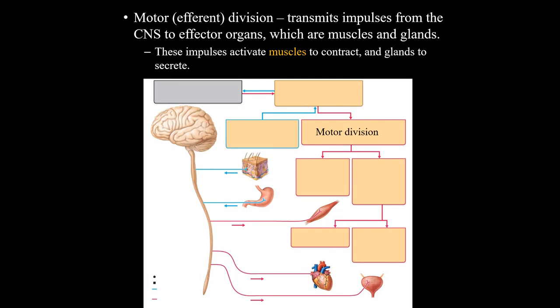After that, you have the motor or efferent division - like the southbound side of the highway. Information comes from the central nervous system out to whatever motor output we have. Efferent is a word that will pop up throughout the rest of AMP2, so make sure you get familiar with it. Efferent starts with an E, and so does exit - this is information that's exiting the central nervous system. Use that to help you remember it.